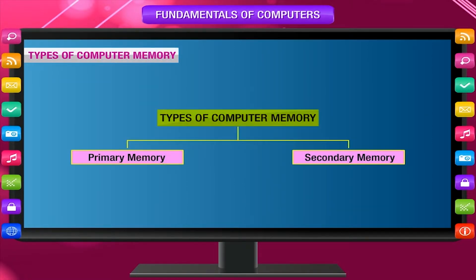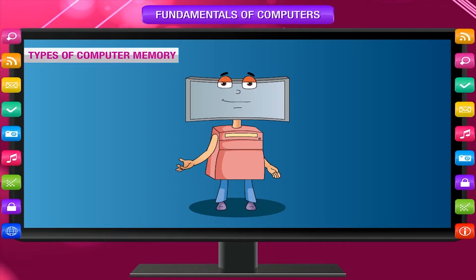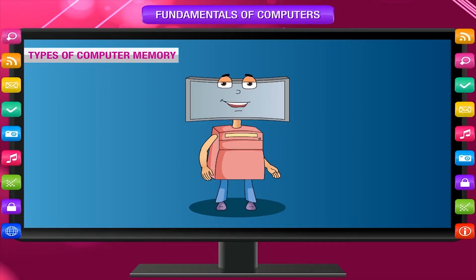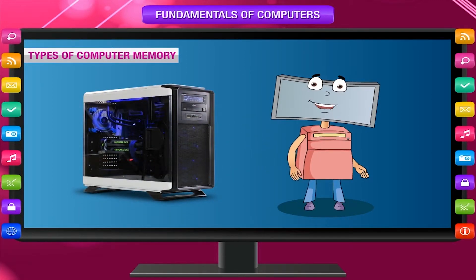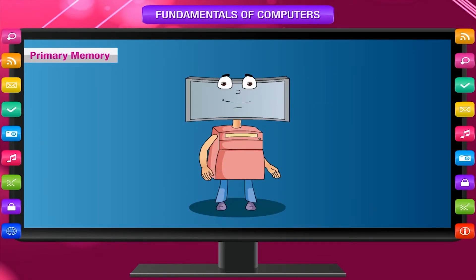A combination of 8 bits makes a byte. There are two types of computer memory: primary memory and secondary memory. Primary memory is again of two types: RAM and ROM. The storage devices are the secondary memory, which store a large amount of data and software permanently. Primary memory is temporary while secondary memory is permanent. The CPU is also known as the system unit, and input devices and output devices are the peripherals attached to it.